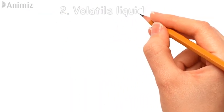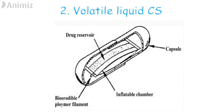The second system is the volatile liquid containing system. It consists of two chambers separated by an impermeable pressure-responsive movable bladder. The first chamber consists of the drug, and the second chamber consists of a volatile liquid — mostly ether — that gasifies at body temperature. Upon administration, the device inflates and releases the drug. After a prolonged duration, the biodegradable polymer degrades, the chamber deflates, the system sinks in the stomach, and is excreted from the body.